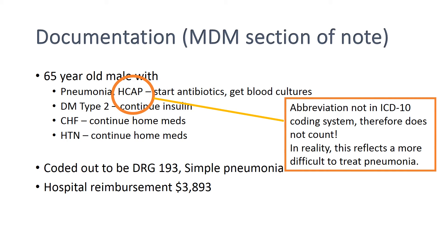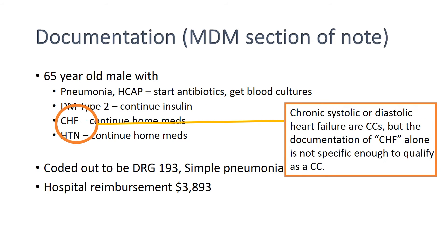HCAP is an abbreviation that's not in the ICD-10 coding system and therefore doesn't count. In reality, this reflects a more difficult-to-treat pneumonia. Also, 'CHF' is not specific enough — it's not clear if this is acute or chronic, systolic or diastolic heart failure — and so this diagnosis does not qualify for a CC or an MCC.